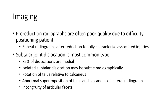Regarding imaging: pre-reduction radiographs are often poor quality due to difficulty positioning the patient. Repeat radiographs after reduction to fully characterize associated injuries. Subtalar joint dislocation is the more common type, representing 75% of dislocations. Isolated subtalar dislocation may be subtle radiographically, with rotation of the talus relative to the calcaneus and abnormal superimposition of the talus and calcaneus on AP-lateral radiographs.